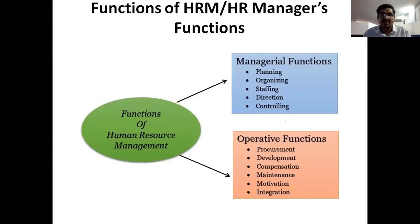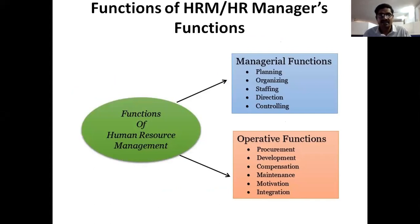Already we discussed functions of HR manager or functions of HR management. HR functions are divided into two types: managerial functions and operative functions. Managerial functions belong to five categories: planning, organizing, staffing, directing, and controlling. Operative functions are procurement, development, compensation, maintenance, motivation, and integration.